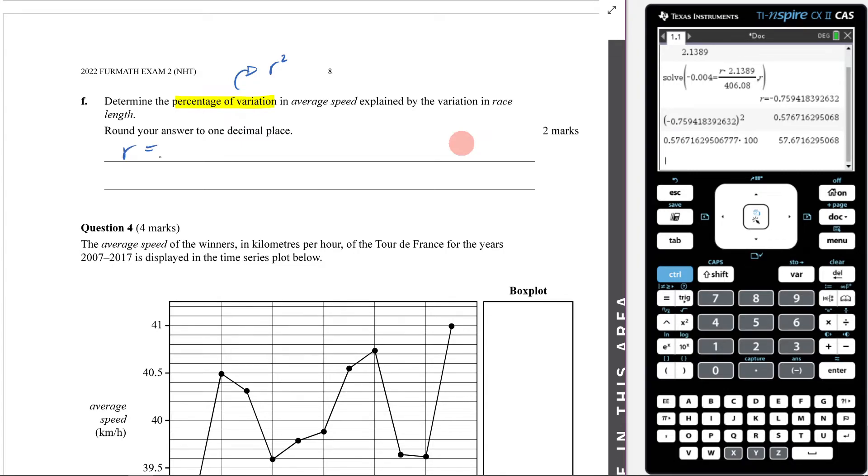And perhaps the way that you would have done that is just by writing down what the r value is. And I'll do that unrounded. So I'm going to get negative 0.759. Therefore my r squared is going to be 0.5767. And then my final answer will be 57.7%. That's my final answer there.